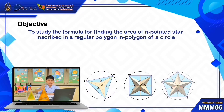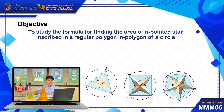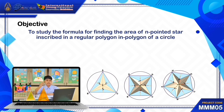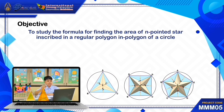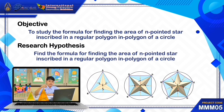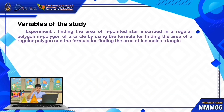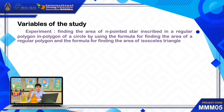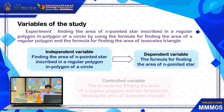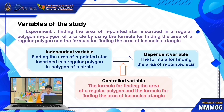Let's see the objective. The objective of this project is to study the formula for finding the area of an n-pointed star inscribed in a regular polygon in a circle.